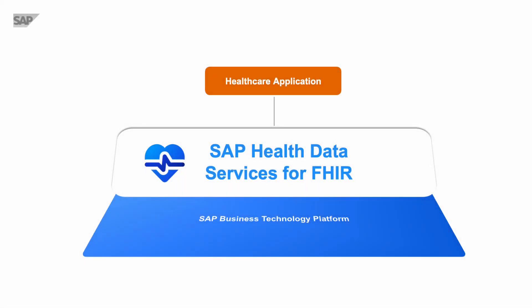SAP Health Data Services for FHIR is SAP's FHIR Server in the Cloud, implemented on SAP Business Technology Platform. It supports you in designing, implementing, and operating an application or service relying on health-related data. It enables you to build interoperable applications that store, process, and exchange health data by leveraging the HL7 FHIR standard.